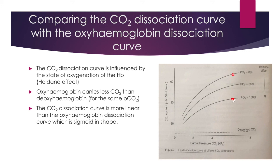As we can see on the graph, at a PCO2 of 6, when haemoglobin is 100% saturated with oxygen, the CO2 content will only be approximately 40mls per 100mls of blood. However, when haemoglobin is 0% saturated with oxygen, the CO2 content will be over 60mls per 100mls of blood, as we see at this point on the graph. The CO2 dissociation curve is more linear than the oxyhaemoglobin dissociation curve, which is sigmoid in shape.